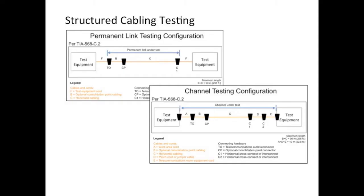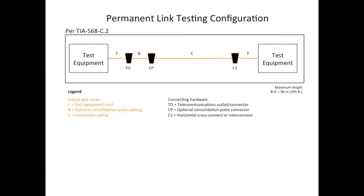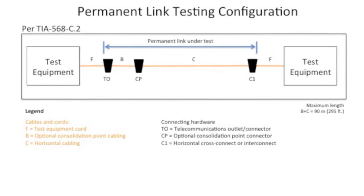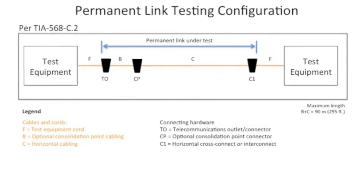Traditionally, structured cabling systems are tested in a permanent link or channel configuration as defined by the TIA 568-C.2 standard. The permanent link is comprised of the horizontal cabling and connecting hardware. It utilizes a permanent link test adapter at each end of the connections under test.